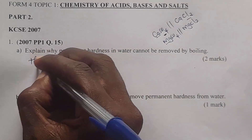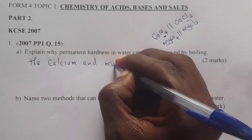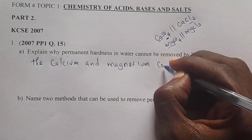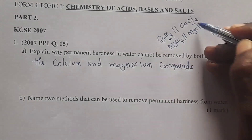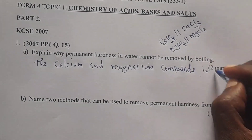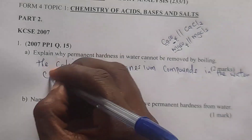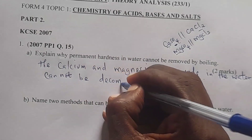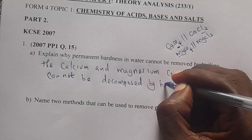So the answer we can say is: the calcium and magnesium compounds — which we mean calcium sulfate, calcium chloride, magnesium sulfate, and magnesium chloride — present in the water cannot be decomposed on heating.